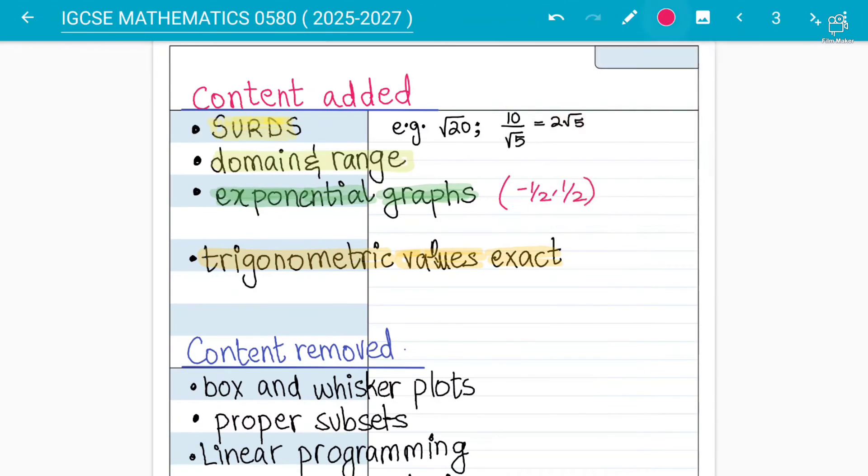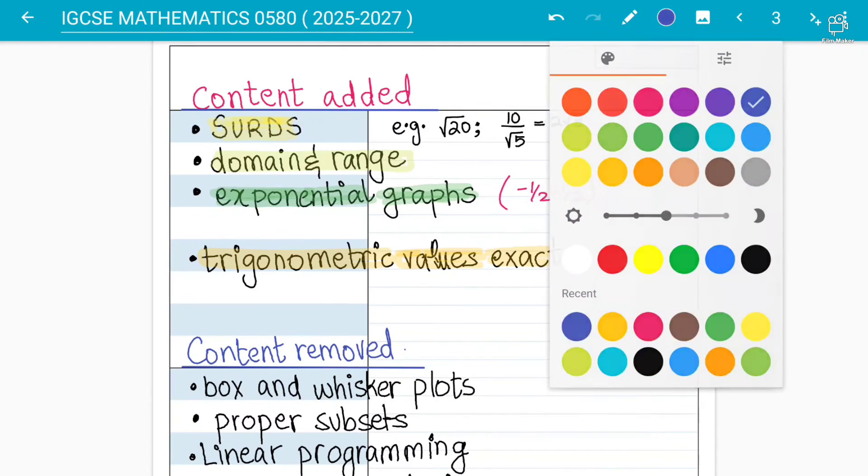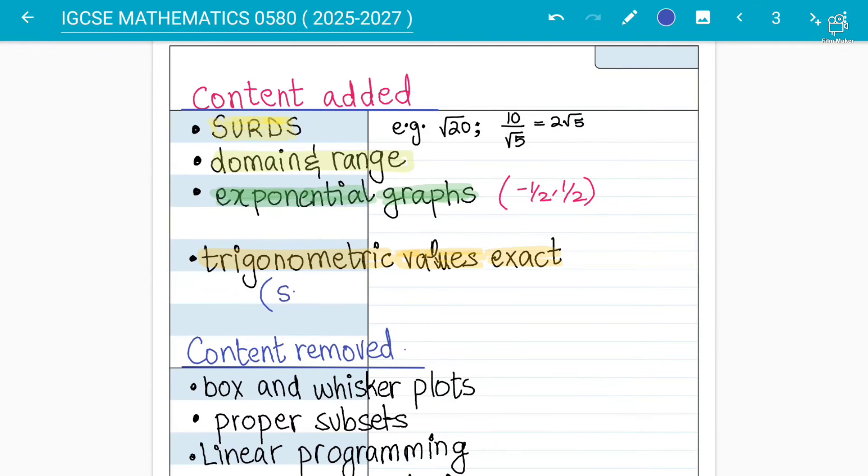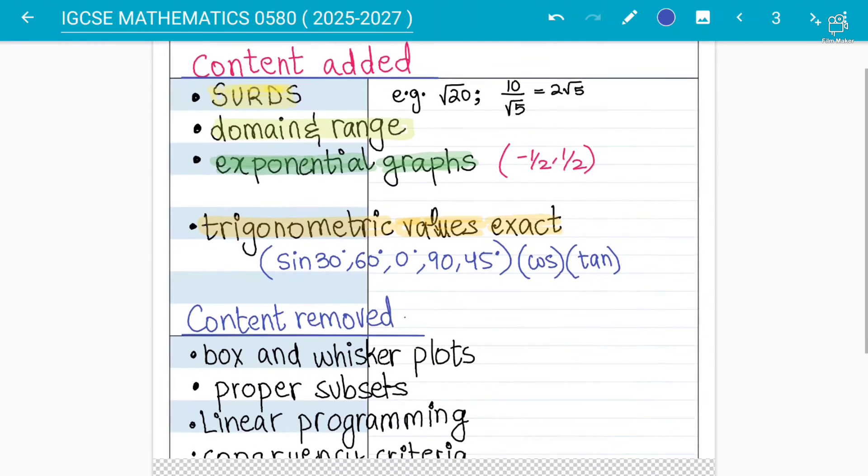You need to know about some trigonometric values, for example students, because they have added you must know what is sine 30, 60, zero degrees, 90 degrees. These values you must know now - that is what they are looking forward, that students must know the values of 0, 30, 60, 45 degrees for sine, cos and tan.